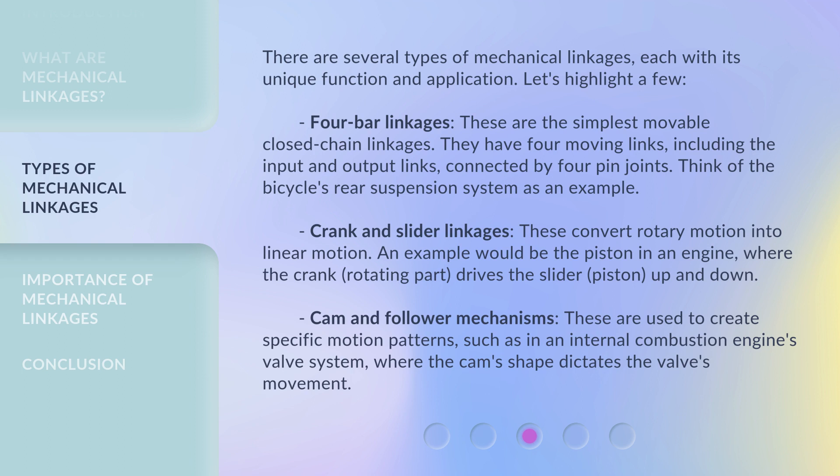Crank and slider linkages convert rotary motion into linear motion. An example would be the piston in an engine, where the crank — the rotating part — drives the slider, or piston, up and down. Cam and follower mechanisms are used to create specific motion patterns, such as in an internal combustion engine's valve system, where the cam's shape dictates the valve's movement.